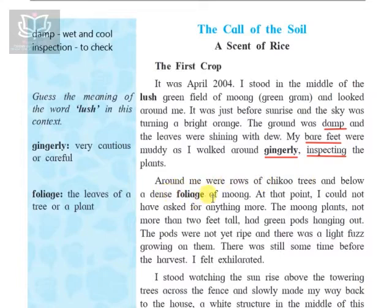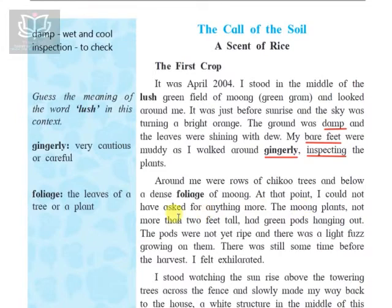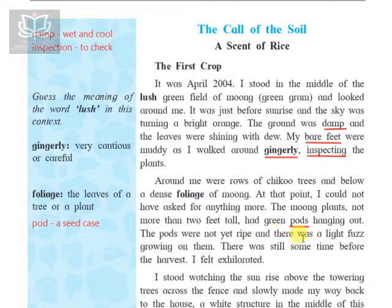Around him were rows of chickoo trees and a dense foliage — meaning the leaves — of moong. At that point, he could not have asked for anything more. The moong plants, not more than two feet tall, had green pods hanging out. Pods here means a seed case — the moong plants had small pods from which the seeds were about to fall. The pods were not yet ripe and there was light floss growing on them.